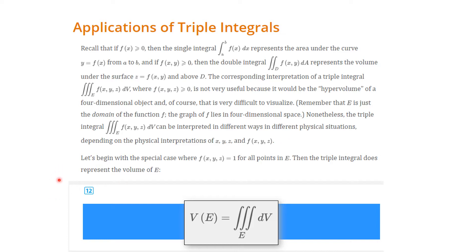Let's begin, as we did with double integrals, with a special case where f of xyz is equal to one for all points in the solid E. Then the triple integral does represent the volume of E. Because you're integrating one, this is dV, so you get V, which is the volume.